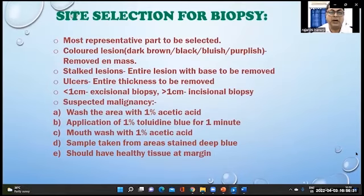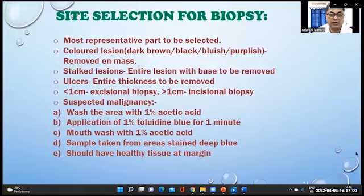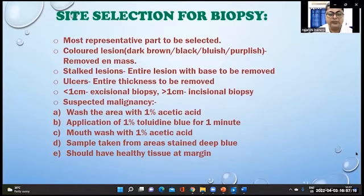The most representative part of the lesion is to be selected. Colored lesions should be removed en masse and the entire thickness of ulcers should be removed. For lesions less than one centimeter, excisional biopsy is preferred; for lesions more than one centimeter, incisional biopsy is performed. The pre-biopsy procedure involves washing with 1% acetic acid, then application of 1% toluidine blue for one minute, followed by a mouthwash. The sample is taken from areas stained deep blue, with healthy tissue at the margin for comparison.